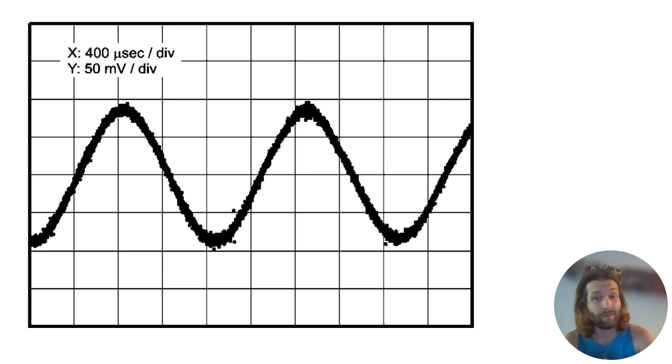The horizontal axis typically represents time. So here we can see, I'll get the little pen thing so we can do a little marker. It's telling us here the division for each square that we've got in the x-axis, each being four microseconds per division.